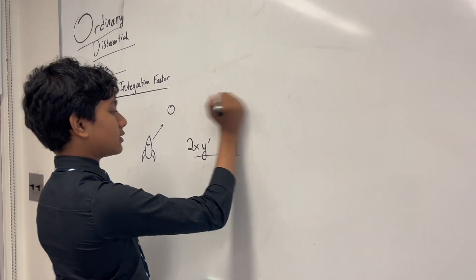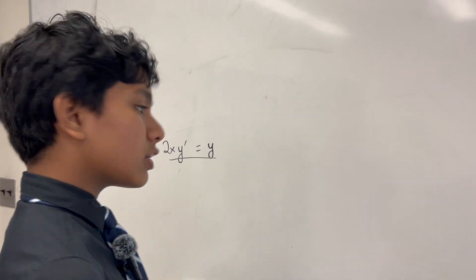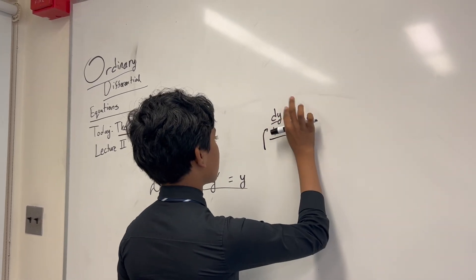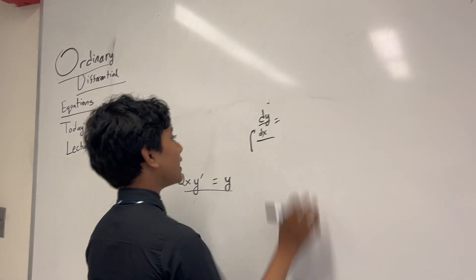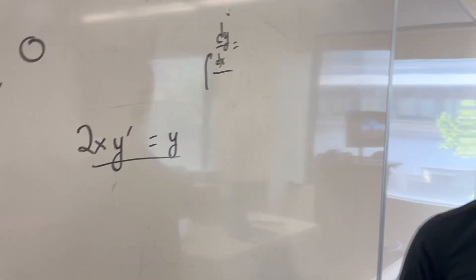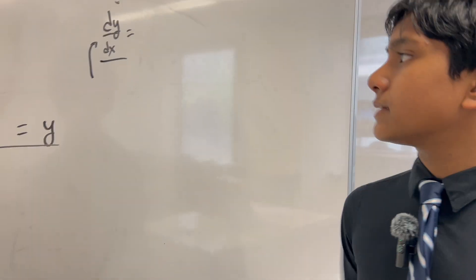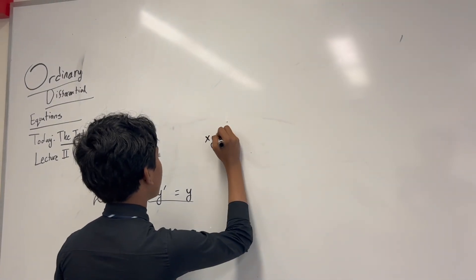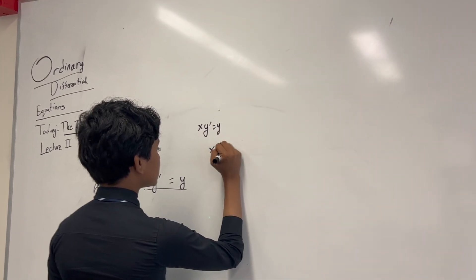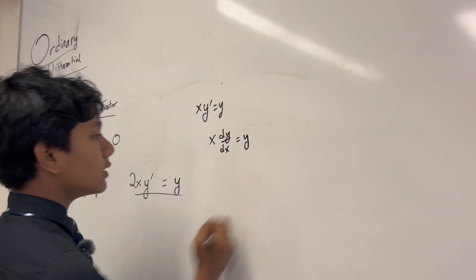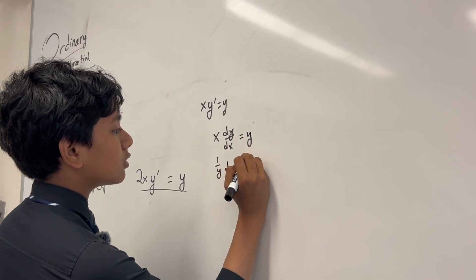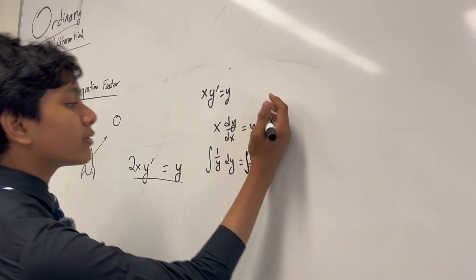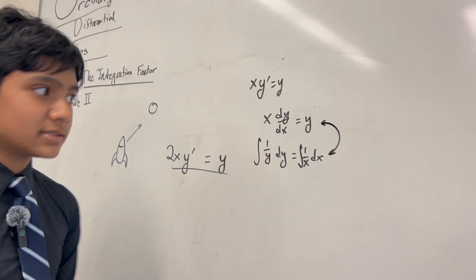Now let's get started with actually talking about how to solve some of these. Last time we talked about separation of variables. We just write the differential form of y prime. And now, if this was real analysis, we'd have to prove that this was a fraction, but luckily this isn't real analysis, so we can just mix and match things. For example, let's say we have x times y prime equals y. Then, by separation of variables, we get x times dy/dx equals y, so we get (1/y) dy equals (1/x) dx. And then we integrate both sides.